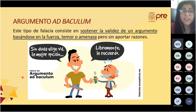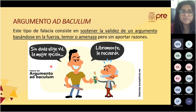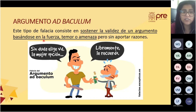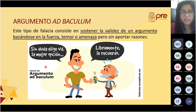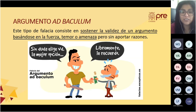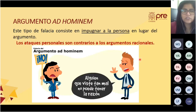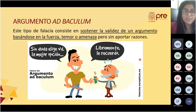La segunda falacia se llama ad baculum. Consiste en sostener la validez de un argumento basándose en la fuerza, el temor o la amenaza, pero sin aportar razones. Por ejemplo: 'Sin duda, usted elige la mejor opción', amenazando a la otra persona. La primera era ad hominem, cuando se ataca a la persona y no el argumento. Y ad baculum, que es la amenaza. Baculum viene de báculo, que es un bastón.